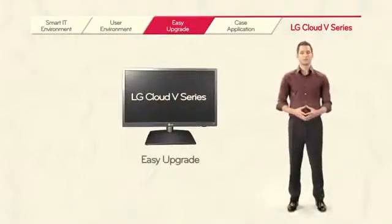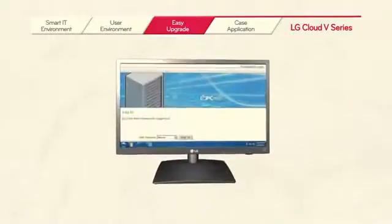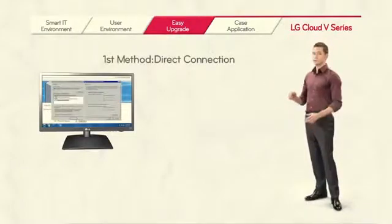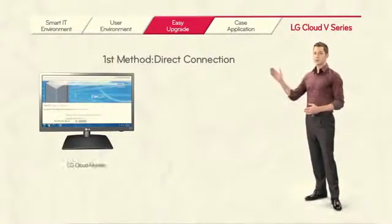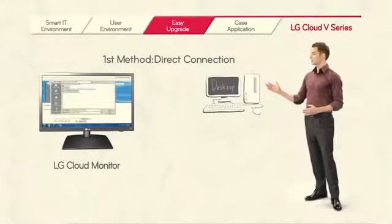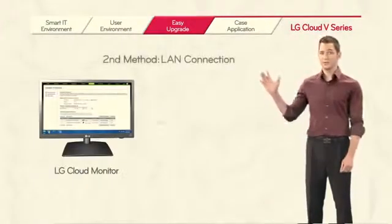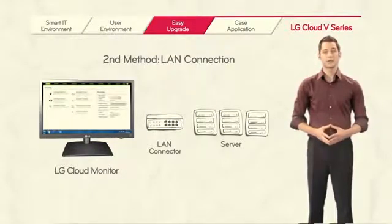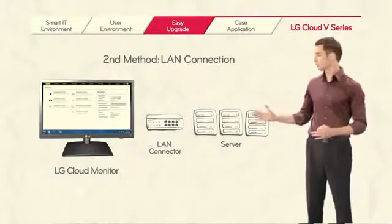I introduced the LG Cloud V Series. To support the latest version of VMware View, an LG Cloud V Series firmware update is required. There are two ways to upgrade the firmware. In the first method, the user upgrades the firmware using a direct connection, which requires an LG Cloud V Series, a PC or laptop, and a LAN cable. The user can personally upgrade the firmware this way. The second method uses the LAN connection to the server, which allows centralized management as it enables several units to be upgraded at the same time through the server.